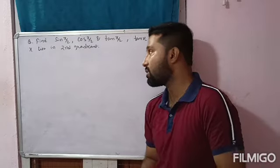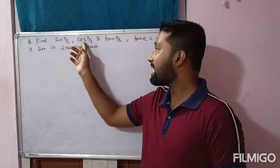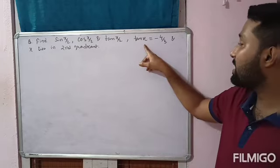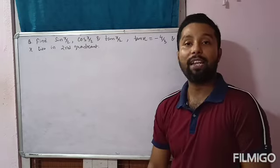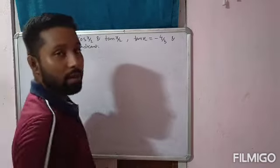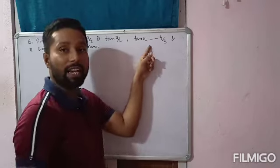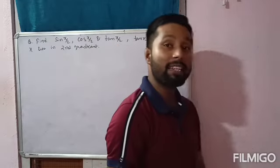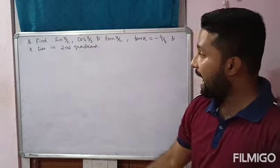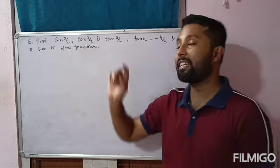The next question is also one standard question. Find the values of sin(x/2), cos(x/2), and tan(x/2) if tan x = −4/3. The value of tan x is given, but you have to find the values at angle x/2. So tan x = −4/3 and x lies in the second quadrant, which is why tan x is negative — in the second quadrant only sin and cosec are positive.